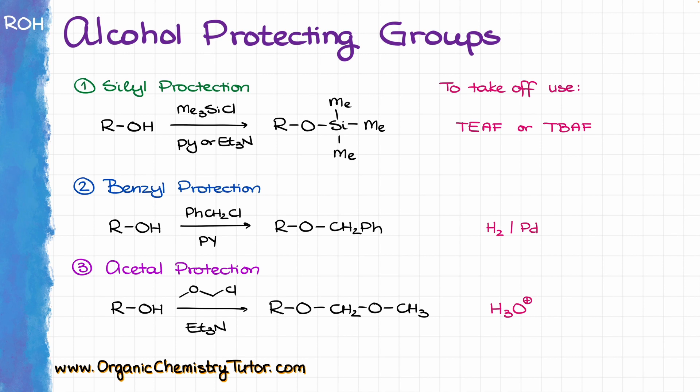So, as you can see, there are options when it comes to alcohol protecting groups. Most likely you are going to use silyl protection as your main go-to protecting group for all alcohols. However, if you see the other ones, you'll know what they do and how to use them. As a general rule of thumb, you want to design your synthesis with the least number of steps possible, and using protection adds two steps — one to install the protecting group and one to later remove it — which comes at the cost of time, money, and most importantly, yield. But sometimes protecting groups are a necessary evil, so don't hesitate to use one if you really need to.